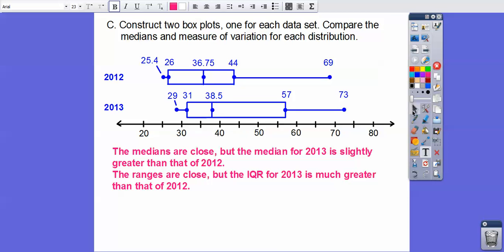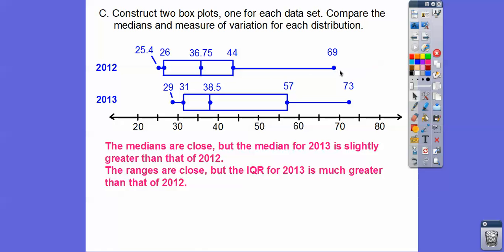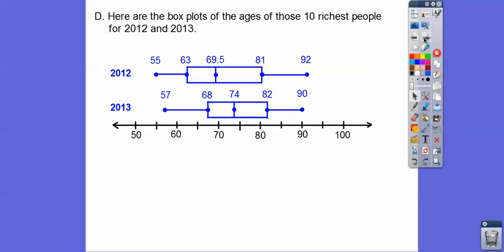The range is the distance from the smallest to the biggest. But look at this IQR, the interquartile range for 2013 is much greater than it is for 2012. See how this box is much wider than this box right here. The numbers from the smallest to the biggest are pretty close, although it's a little bit higher in 2013. But the IQR is definitely much more spread out in 2013.